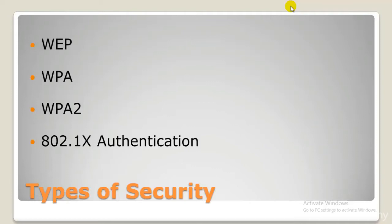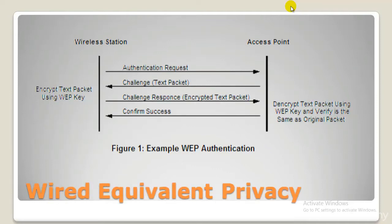WEP, whose full form is Wired Equivalent Privacy, is the most widely used Wi-Fi security algorithm in the world. That is a function of age, backwards compatibility, and the fact that it appears first in encryption type selection menus in many router control panels. WEP was ratified as a Wi-Fi security standard in September 1999. The first versions of WEP were not particularly strong even for that time, because United States restrictions on the export of cryptographic technology led to manufacturers restricting devices to only 64-bit encryption. When restrictions were lifted, it was increased to 128-bit. Despite the introduction of 256-bit WEP encryption, 128-bit remains one of the most common implementations.